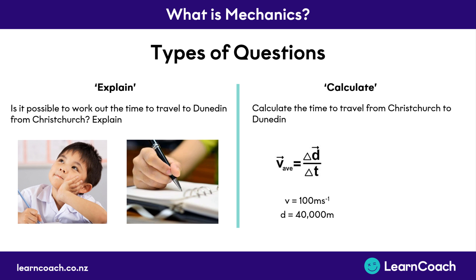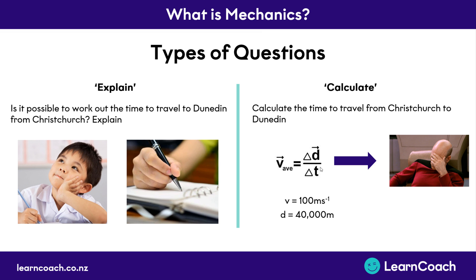On the other hand, there are calculate questions, and you can tell it's a calculate question because it has the word 'calculate' in it. So it might be: 'Calculate the time to travel from Christchurch to Dunedin,' and then they'll give you some numbers. In a calculate question, you need to get the numbers, work out what they mean, put them into a formula, and work out the correct number answer. Often this involves doing algebra, but the good news is that in physics at this level the formulas are quite simple. Most of the time you'll just grab the numbers they give you, put them in the right place in the equation, and it should be fairly simple to rearrange.